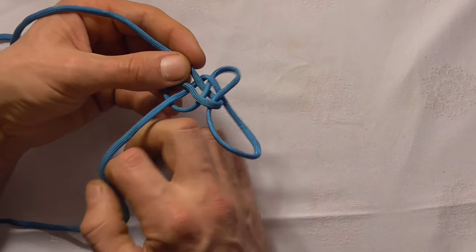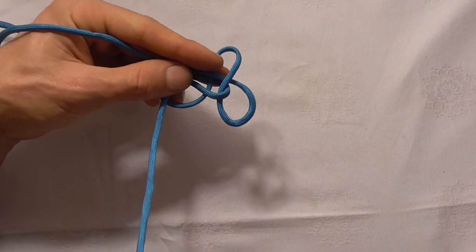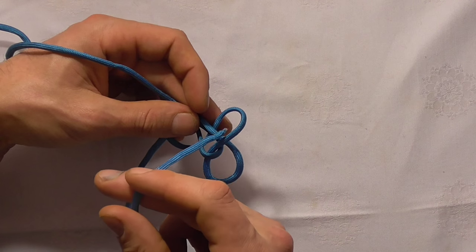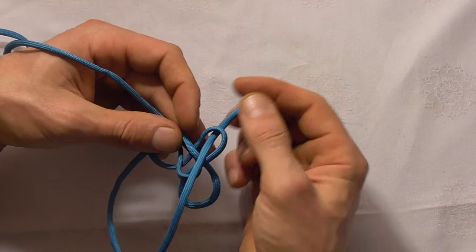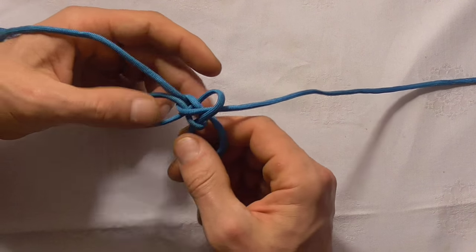I want to make them around about the same size. Then I want to take my end and throw it down that right-hand loop again. Now just work the knot gently together.